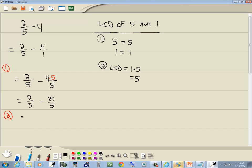Now they have the same denominator, so step 2 is to add or subtract the top parts. So we got 2 minus 20 over 5, which gives us negative 18 over 5. There's no simplifying to do on this one, so we don't do step 3. Negative 18 over 5 is our answer.